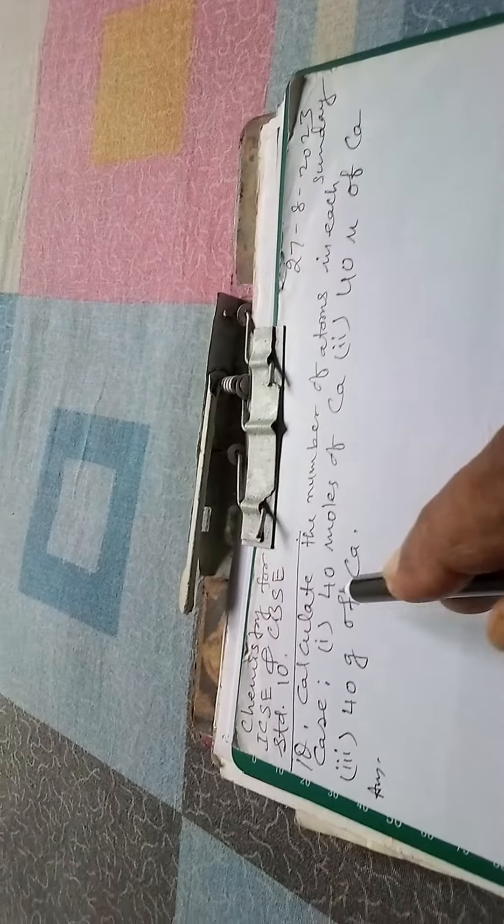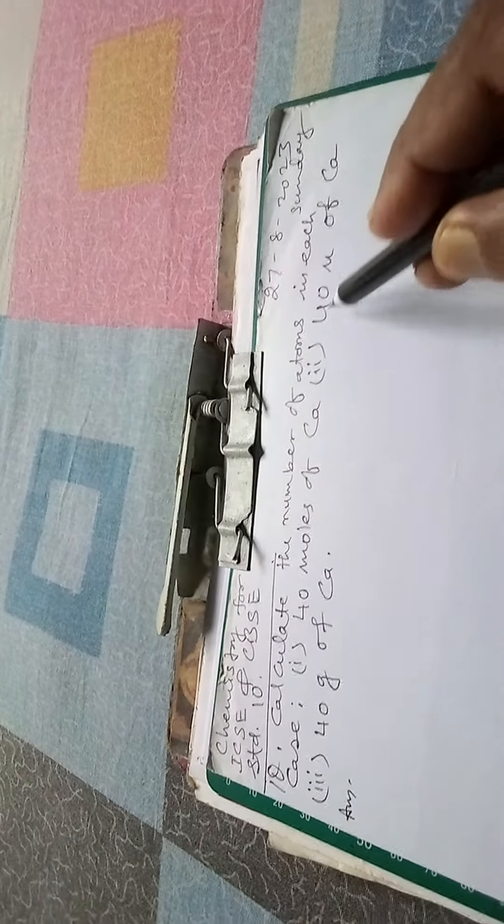Hey students, today I am going to explain you one question from chemistry for ICS and CVS standard time. Question is calculate the number of atoms in 40 moles of calcium, 40 U of calcium, and 40 grams of calcium.